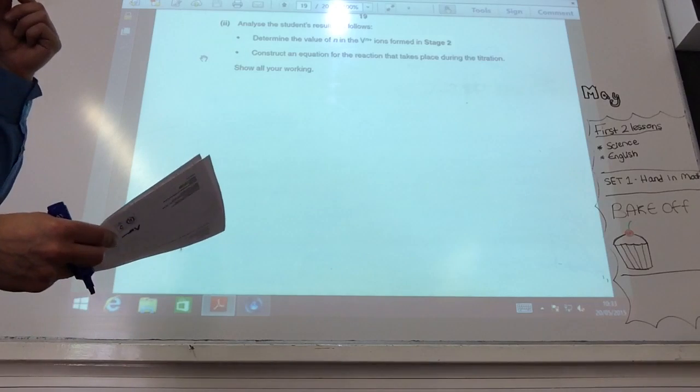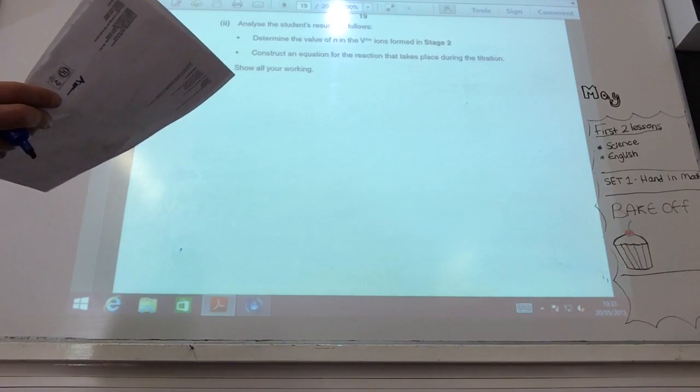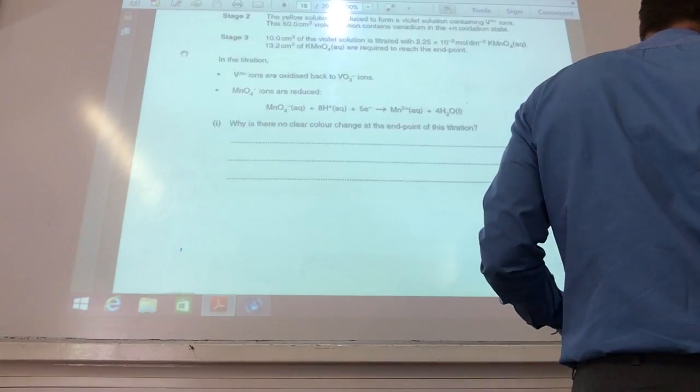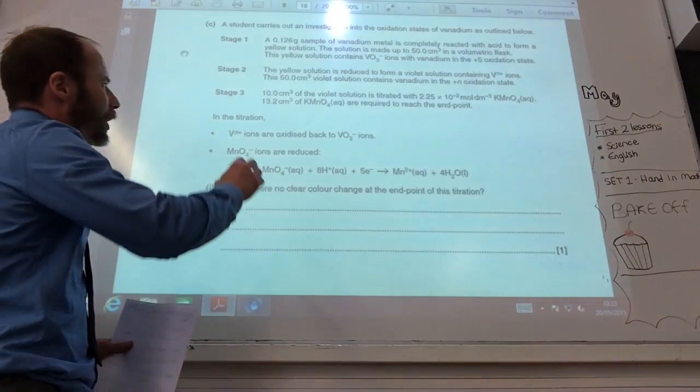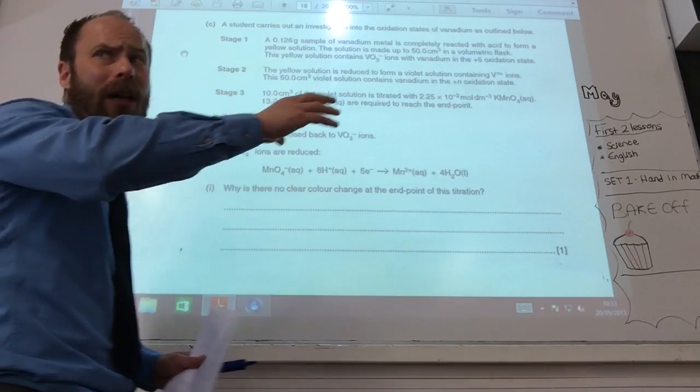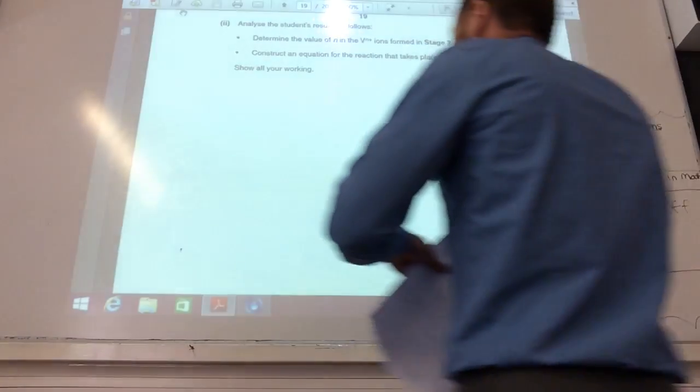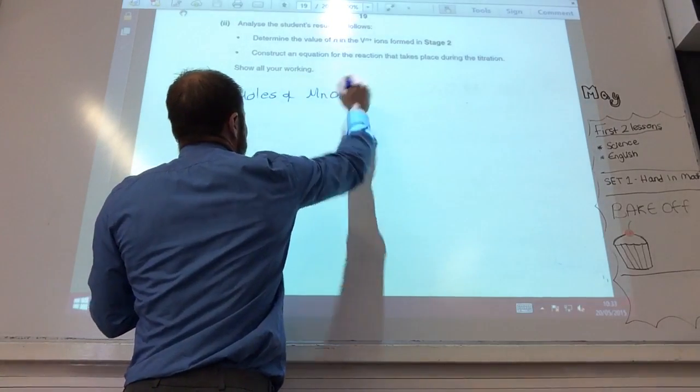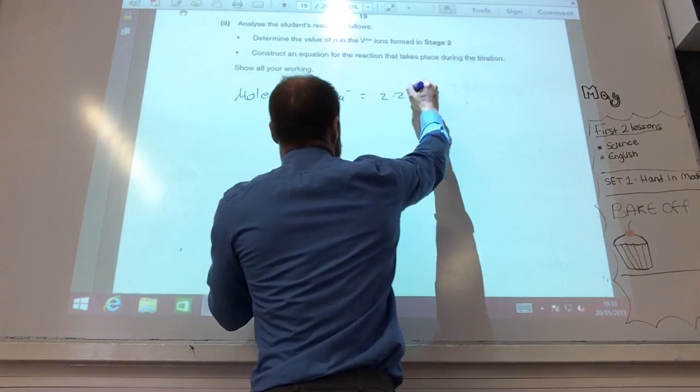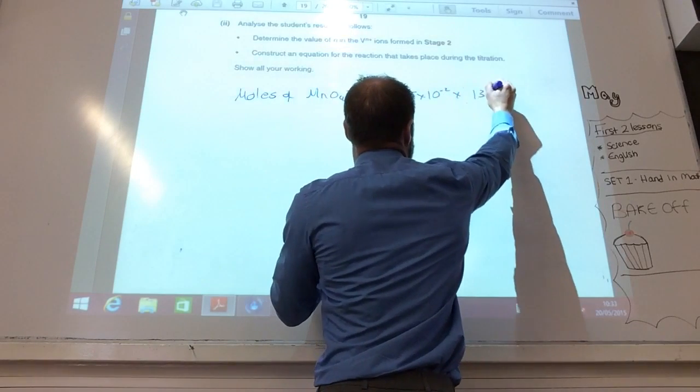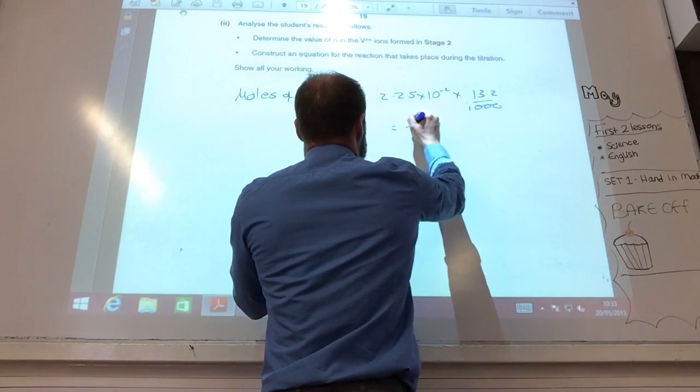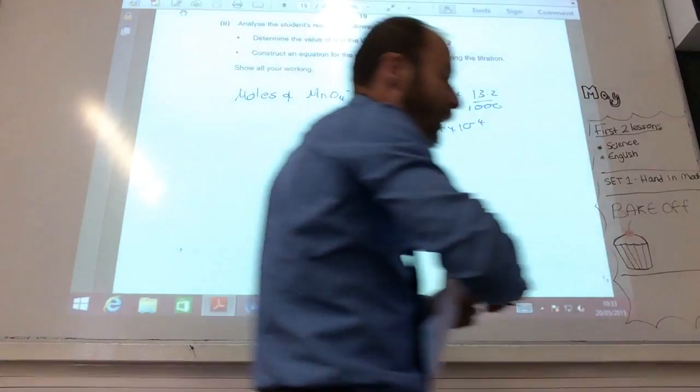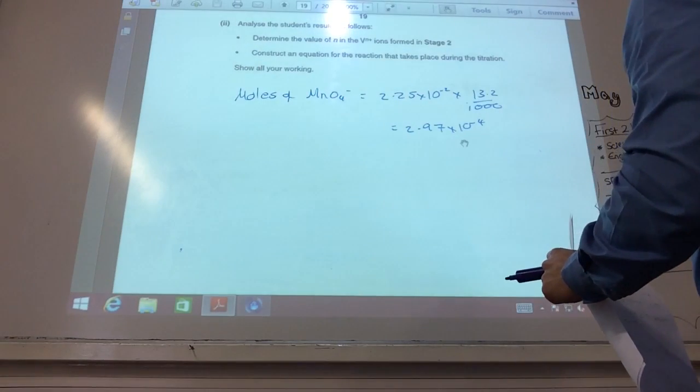So, most of you stuffed this one up. So, let's have a look at this one. What are you going to do, first of all? The first thing you're going to do is you're going to work out your moles of MnO4-, aren't you? That's what you've got to do. So, let's do that. Moles of MnO4- is 2.25×10^-2 times 13.2 over 1,000. That equals 2.97×10^-4.